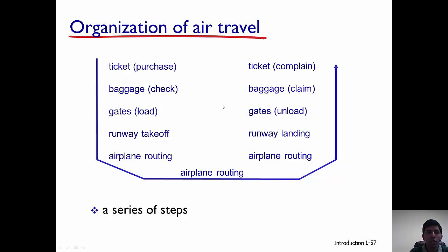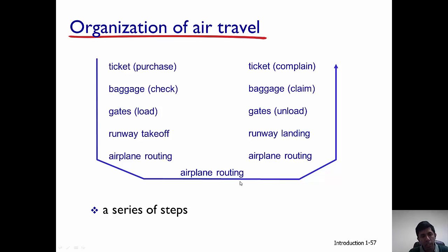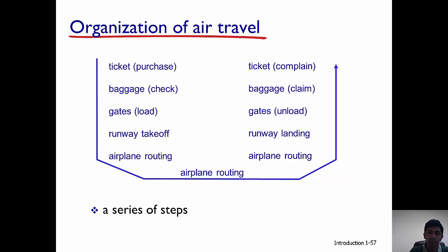Consider this example: first you purchase a ticket, then when you reach the airport you check in your bags. The link layer packets are put onto the physical link connected to the source. The flight takes off on the runway — analogous to the packet moving through the network. As you travel, say from the United States to Europe, the packet moves through routers, and one of the headers is added at each step.